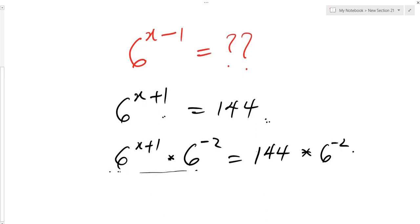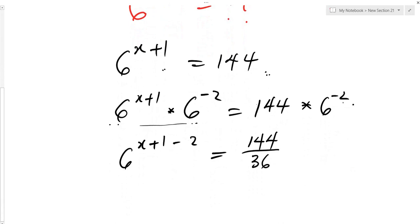Since this one is of the same base, we just say 6 to the power of x plus 1 minus 2. This will now be 144 times 6 to the power of minus 2, because 6 to the power of minus 2 is 1 over 36.